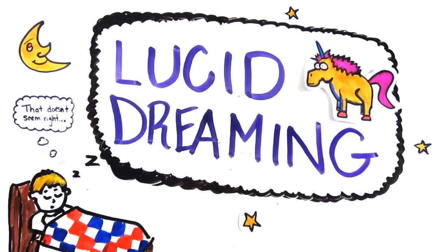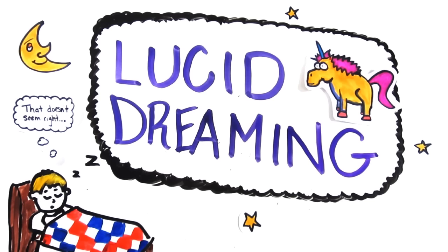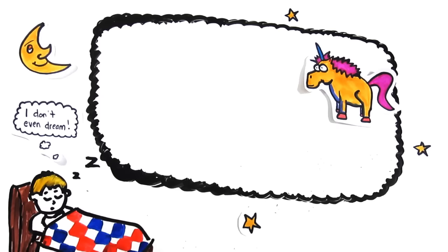It turns out, lucid dreaming is entirely possible, and with a little effort and practice, even you can do it. Now some of you might be saying, I don't even dream, but the truth is everybody has about three to seven dreams a night. The problem is we quickly forget them.